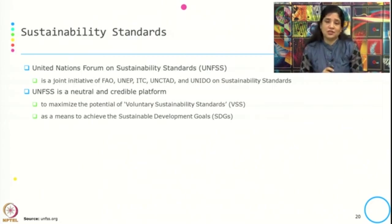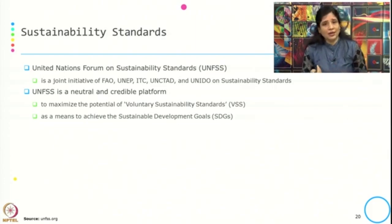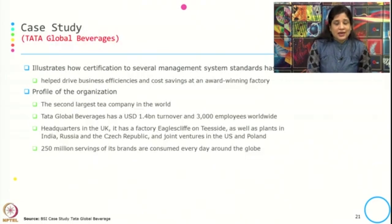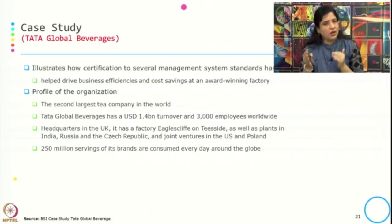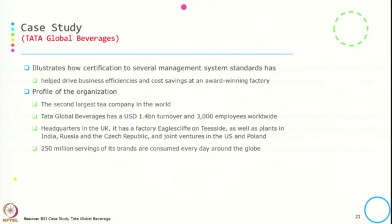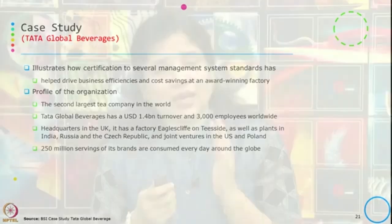There are many more voluntary sustainability standards. We have selected a few — such as Rainforest Alliance, Fair Trade, Organic, and Sustainable Tourism — to understand what each is relevant for. The bigger question for organizations is: if we adopt a standard, what next? What are we going to get from it? Because adopting a standard is not free; there is a substantial amount of investment associated with adopting a standard, following a framework, or following a system.